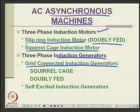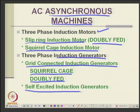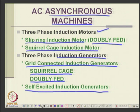An induction machine works as an induction generator when slip becomes negative, i.e., speed exceeds synchronous speed — it then feeds power to the grid. These are now used for wind energy systems as grid-connected induction generators. There are also doubly fed induction generators, where power can be fed through slip rings to the rotor as well. Self-excited induction generators use a capacitor to provide reactive power and do not require a grid connection, making them grid-independent.